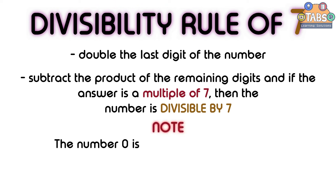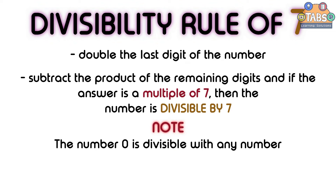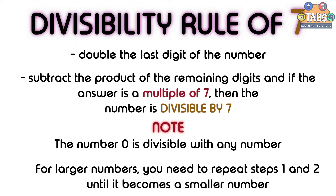Please take note that 0 is divisible by 7 because 0 is divisible by any number. And for larger numbers, we need to repeat steps 1 and 2 until it becomes a smaller number.